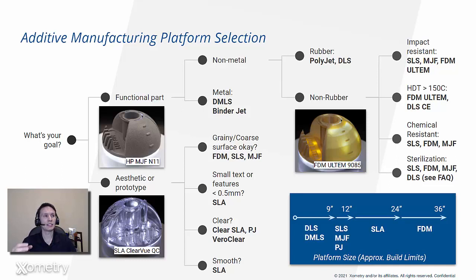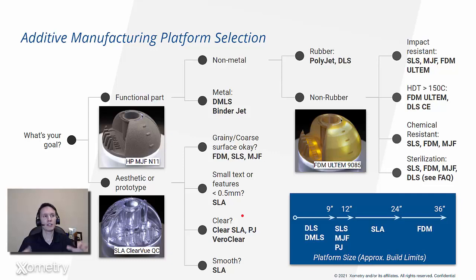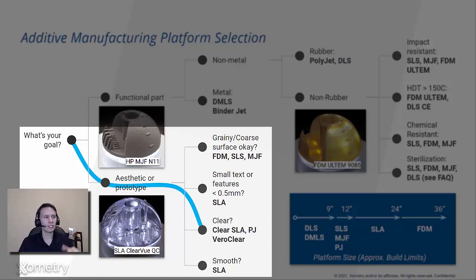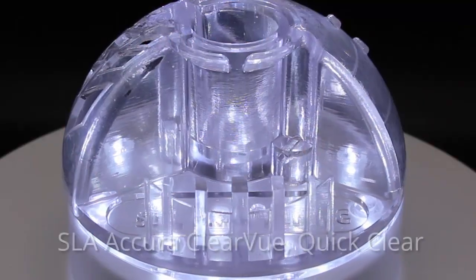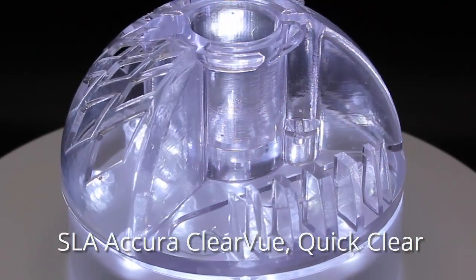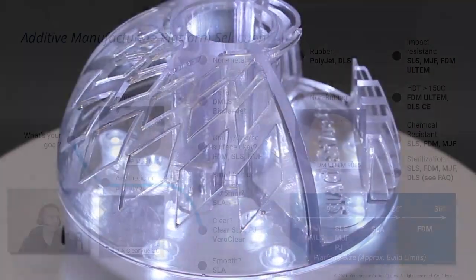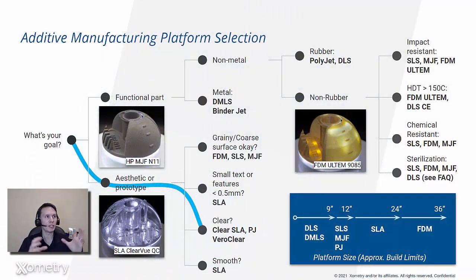When the goal is aesthetic, it's not necessarily about function but about beauty — so I may be looking for an aesthetic prototype. Looking through the guide, it probably can't have a grainy or coarse surface, so it's probably not FDM, SLS, or MJF. It's not necessarily about small text, but I do want something clear. Very quickly I can down-select and say that for this specific need I can choose clear SLA or PolyJet Vero Clear. We have great materials like SLA Clear View with a finish called Quick Clear, which brings that matte clear look up to a semi-gloss with a clear coat.